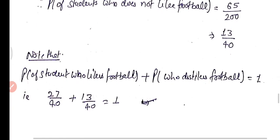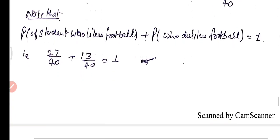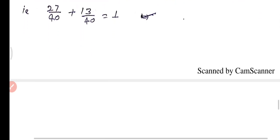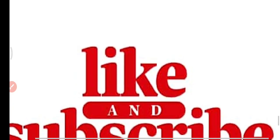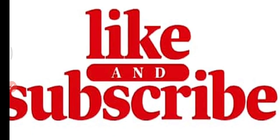Note that P(likes football) + P(dislikes football) = 27/40 + 13/40 = 40/40 = 1, confirming that P(E) + P(not E) is always equal to 1 — keep that in mind. This is all about worksheet number 34. If you learned from this video, please subscribe to my channel and share this video as much as you can. Thanks for watching.